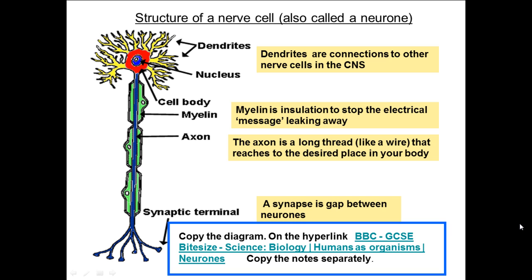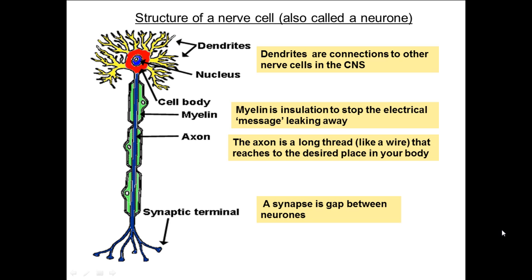The diagram here shows the structure of a nerve cell. Sometimes nerve cells are referred to as neurons and they have several different organelles — organelles just basically means parts. The first part is called a dendrite, and a dendrite is a connection to other nerve cells in the central nervous system. You also have a nucleus which contains all the genetic information within the cell. Two other organelles are the myelin sheath, which acts as an insulator so it stops other nerve cells from being stimulated, and it also speeds up the rate of the impulse travelling down the nerve cell. The axon is the physical bit that actually carries the electrical impulse from one end of the cell to the other. You also have the synaptic terminal, and a synapse is a gap between neurons.